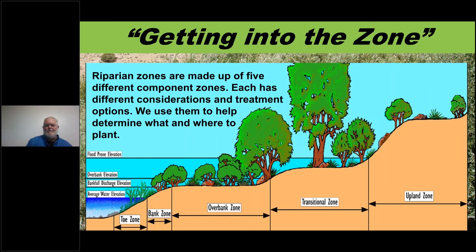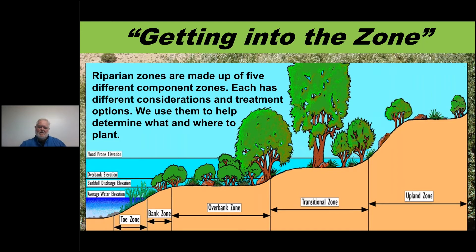Each zone has different consideration and treatment options. We use the zones to help determine what and where to plant. These zones all have different water levels — average water elevation, bank-full water elevation, overbank elevation, flood-prone elevation — all giving you an idea of how the stream works and where water goes.